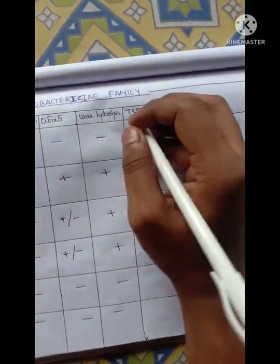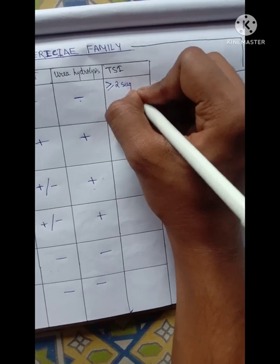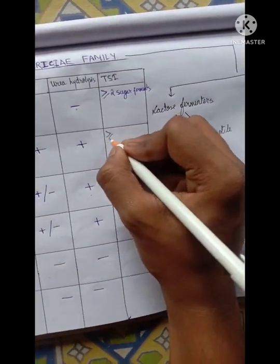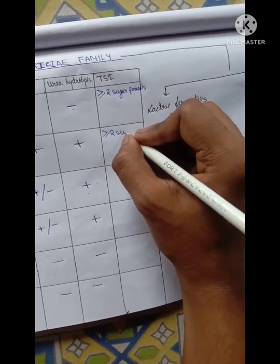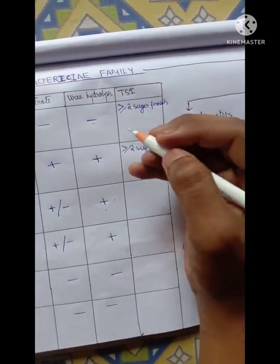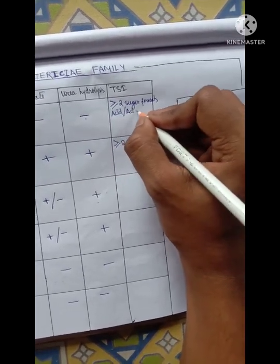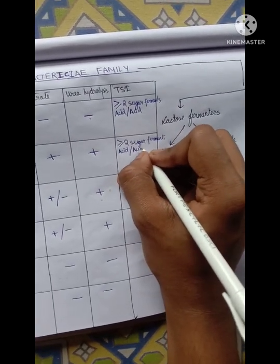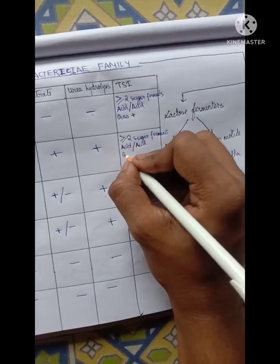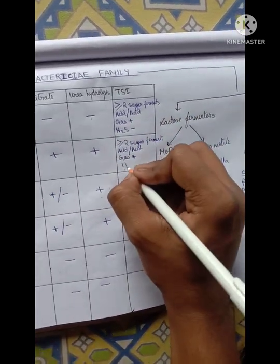For E. coli and Klebsiella, the TSI results are the same. Both of them ferment more than two sugars — that is Glucose, Mannitol, and Sucrose — all of them can be fermented by E. coli and Klebsiella. Since they ferment more than two sugars, it will produce Acid/Acid (AA). Both of them will produce gas, but H2S will be absent in both of them.